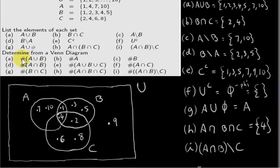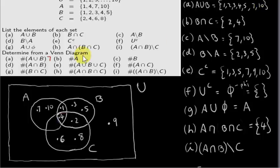In this next question, we want the number of elements in A union with B — that's what the hash symbol represents. I've listed the elements in A union with B, and counting them we get seven elements. The number of elements in A intersecting B: the intersection of A and B has two elements inside it. The number of elements in B intersecting C is also two — we have the elements two and four.